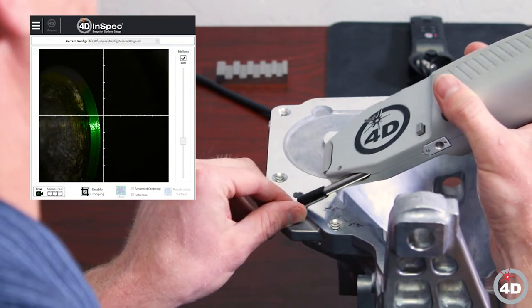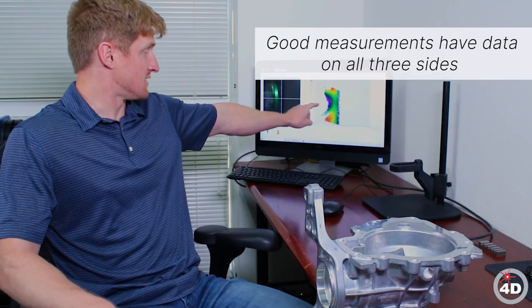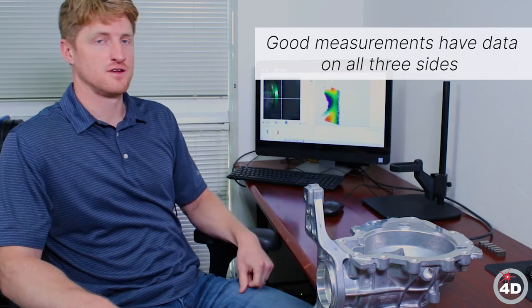Once I'm happy, I'll click the button on top of the instrument to get a 3D measurement. What I look for in a good measurement is to make sure data is on all three sides of the chamfer, as you see here.